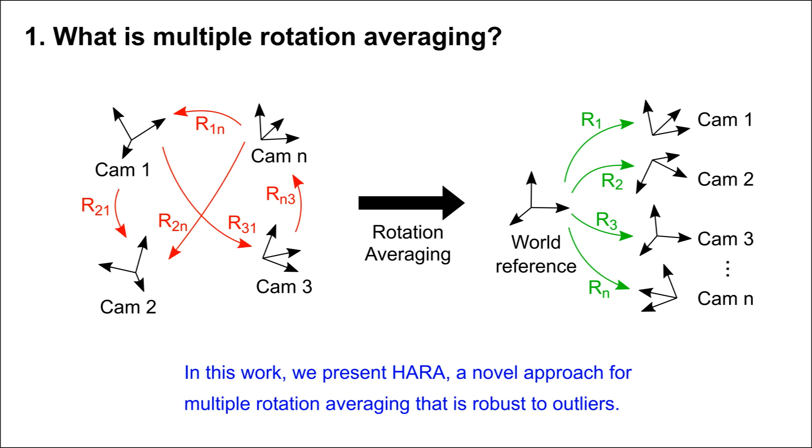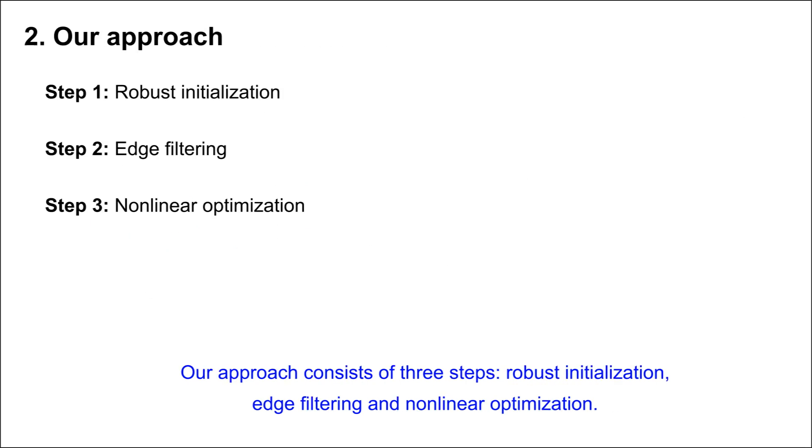In this work, we present HARA, a novel approach for multiple rotation averaging that is robust to outliers. Our approach consists of three steps: robust initialization, edge filtering, and nonlinear optimization.